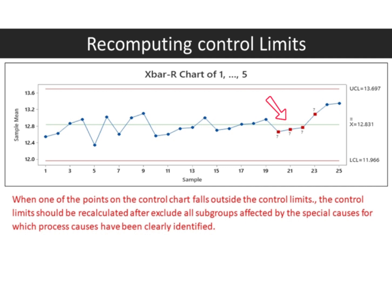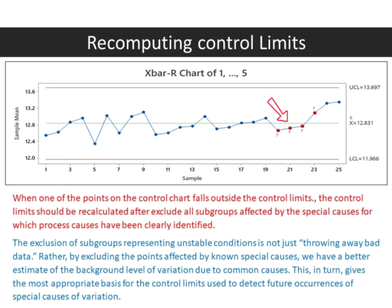When one of the points on the control chart falls outside the control limits, the control limits should be recalculated after excluding all subgroups affected by the special causes for which process causes have been clearly identified. The exclusion of subgroups representing unstable conditions is not just throwing away bad data. Rather, by excluding the points affected by known special causes, we have a better estimate of the background level of variation due to common causes. This, in turn, gives the most appropriate basis for the control limits used to detect future occurrences of special causes of variation.